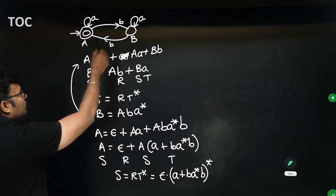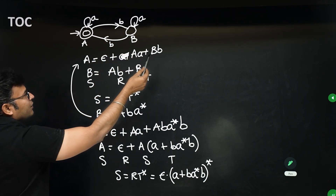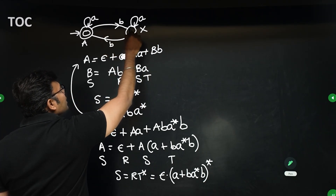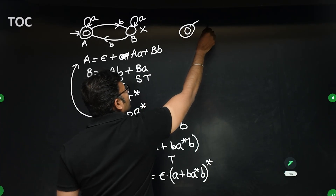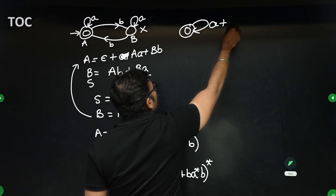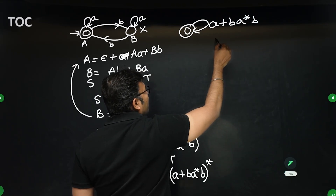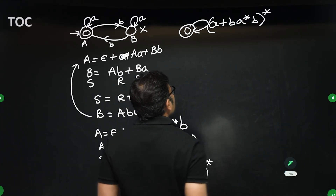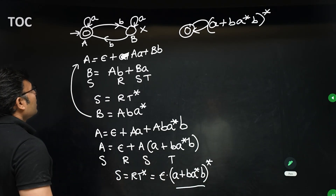Now a second example: even number of b's. You can eliminate the intermediate state. What you get is B·a*·B. The final state will contain two loops — a is there, and along with that it gets B·a*·B — giving (a + Ba*B)*, which is the answer by state elimination. Using Arden's theorem gives the same result.